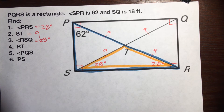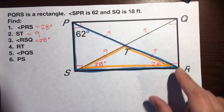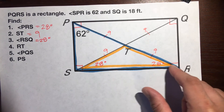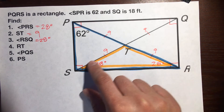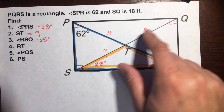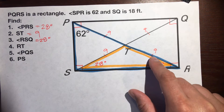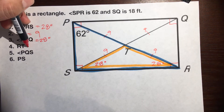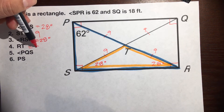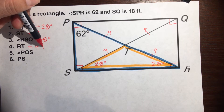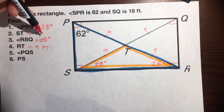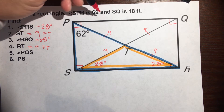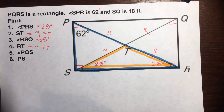What is the length of RT? We already figured that out, because we know all the halves are congruent. So we already know RT is 9 feet. Don't forget to include the units.